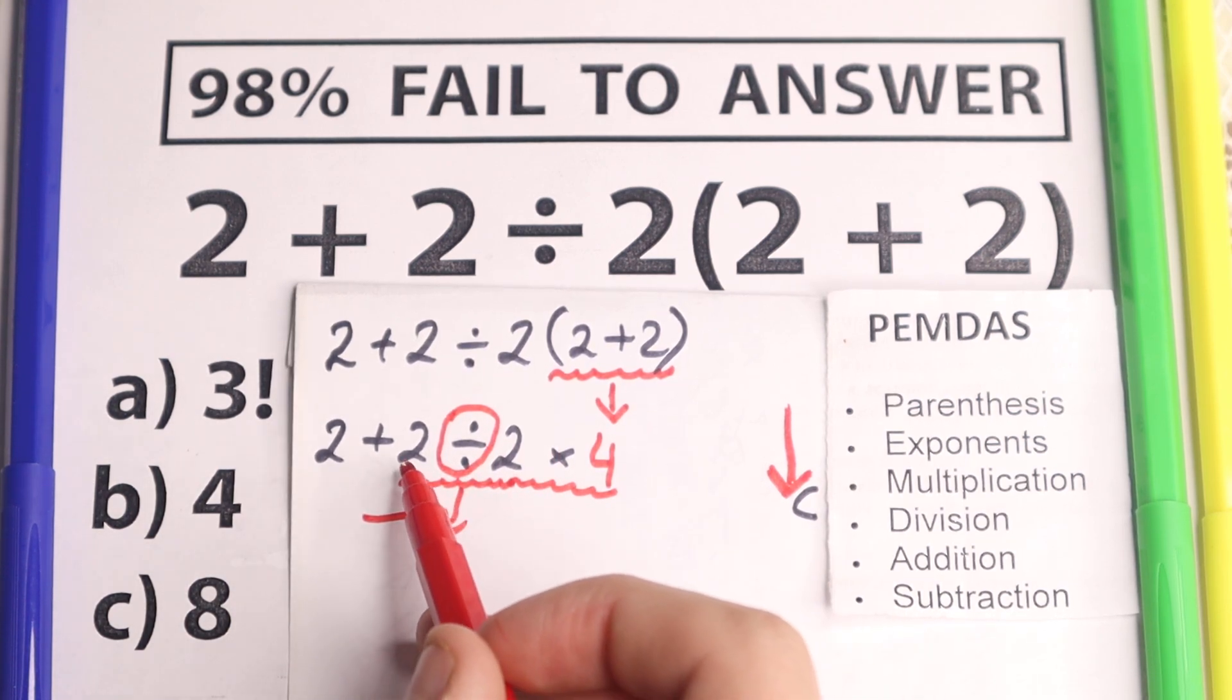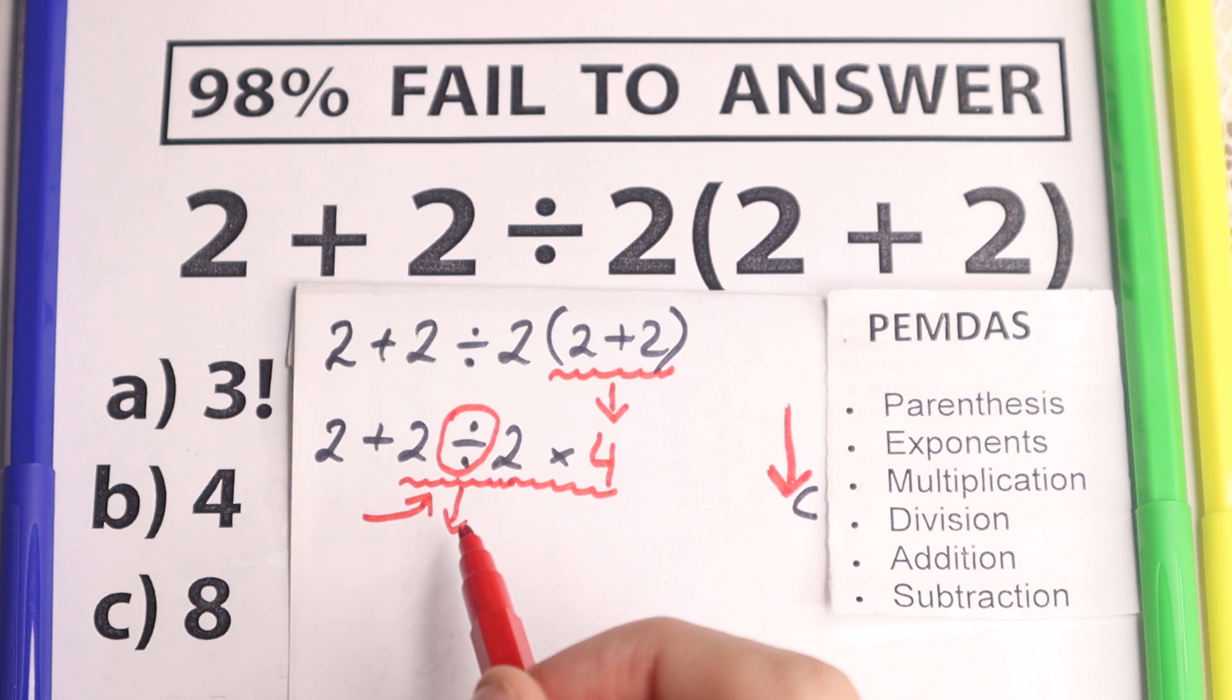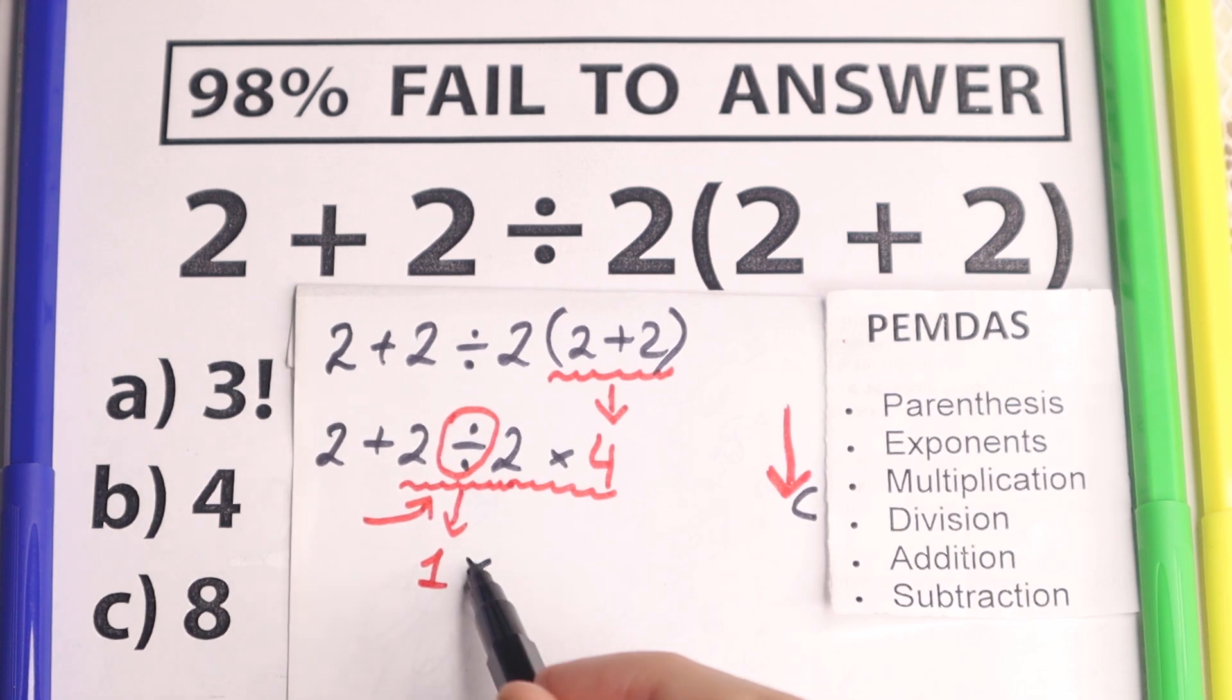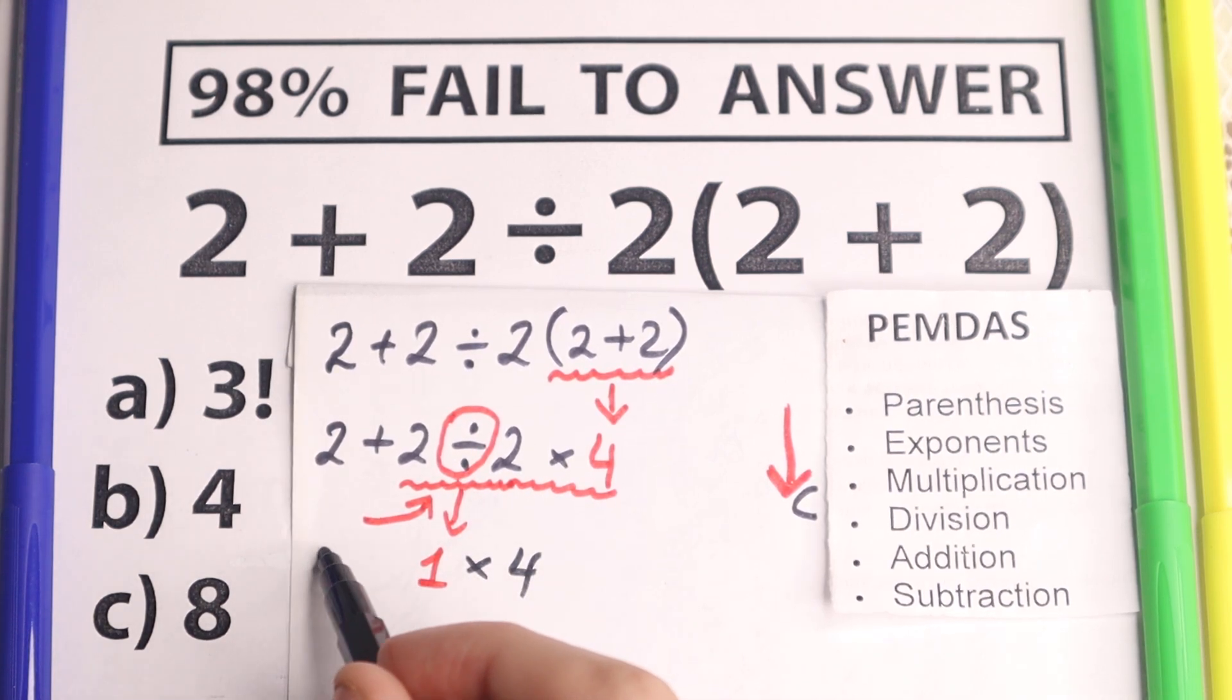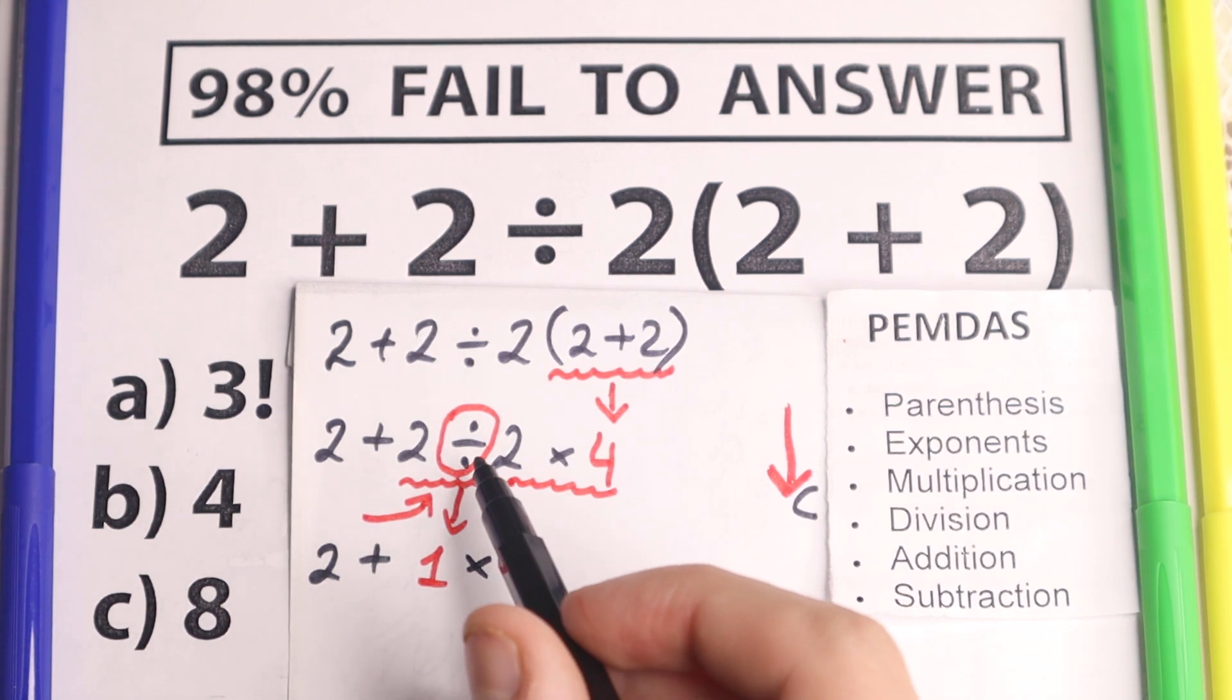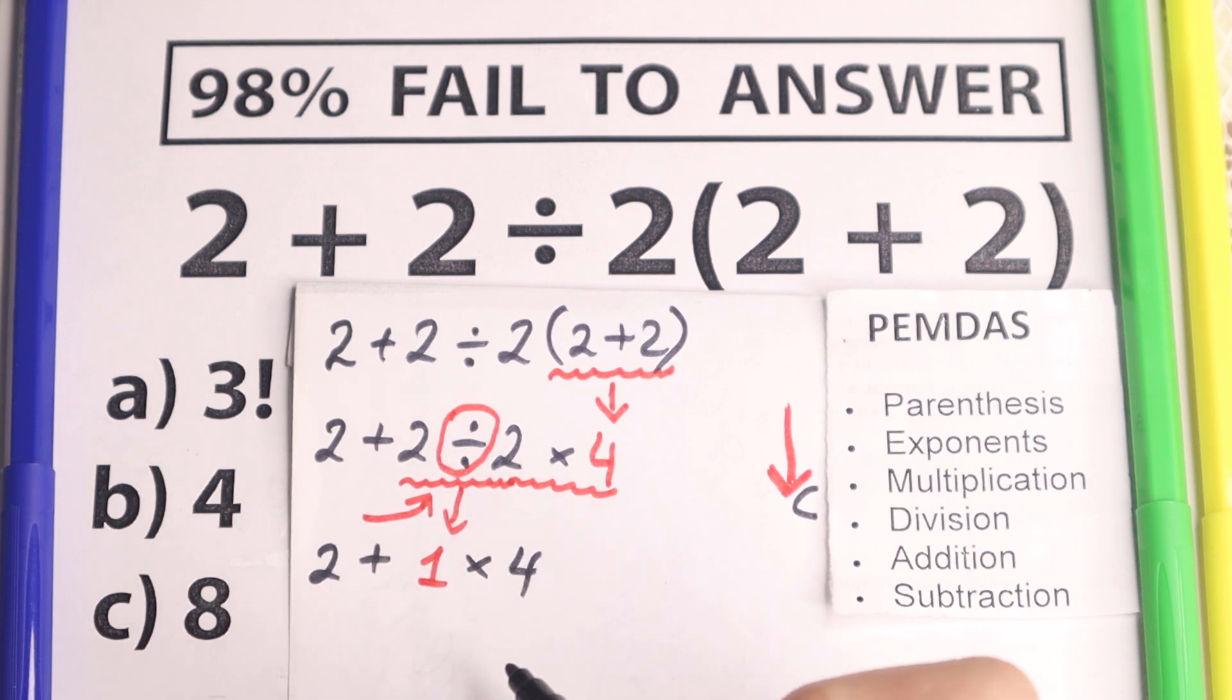So let's divide 2 ÷ 2, which is equal to 1. And I write this expression that we have on the right hand side. So 1 × 4 and in the beginning, 2 plus. I hope you understand this step. We just scanned what was the first sign from left to right.